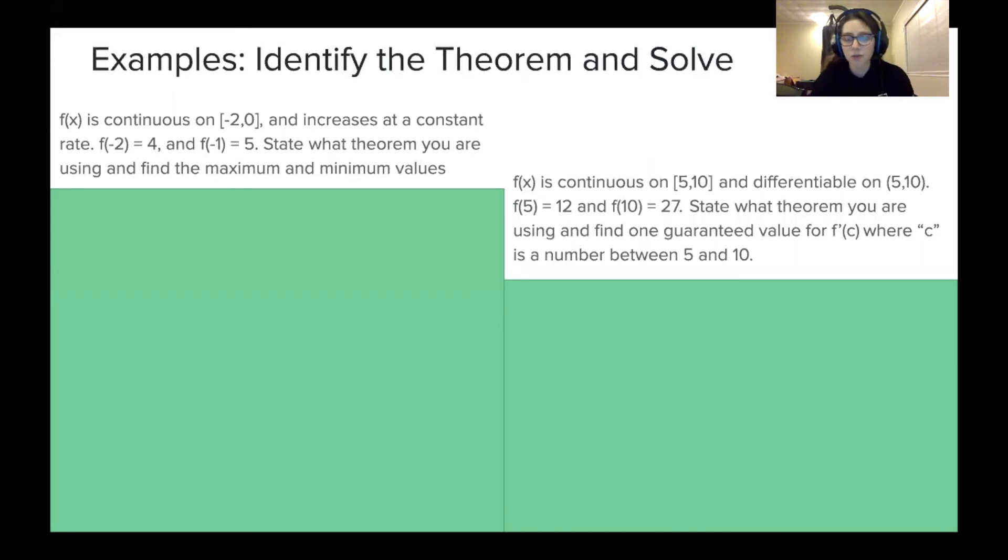Okay, now we're going into a set of three problems where I'm actually going to ask you to solve them as well as state which theorem you're going to use. So let's get into them. The first one, it says, f(x) is continuous on the closed interval from -2 to 0 and increases at a constant rate. f(-2) is 4 and f(-1) is 5. State what theorem you're using and find the maximum and minimum values.